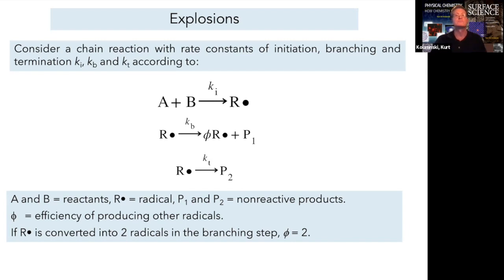R-dot is a radical species that can go on to produce through branching more radicals. And the efficiency of the production of other radicals is given by this factor, phi. If two radicals were produced from every R-dot, then phi would equal two.